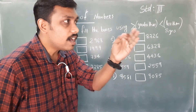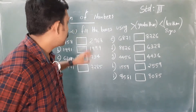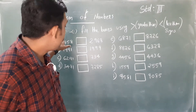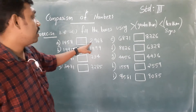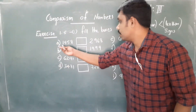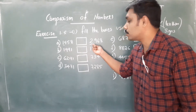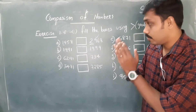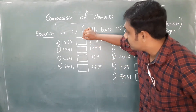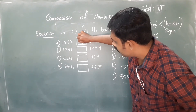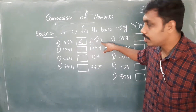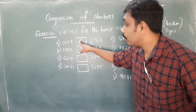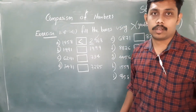The second rule: check the left extreme number. Here the left extreme number is 1, and here it is 2. So 2968 is larger. We indicate the sign with the open mouth pointing to the larger number and the point towards the smaller number.